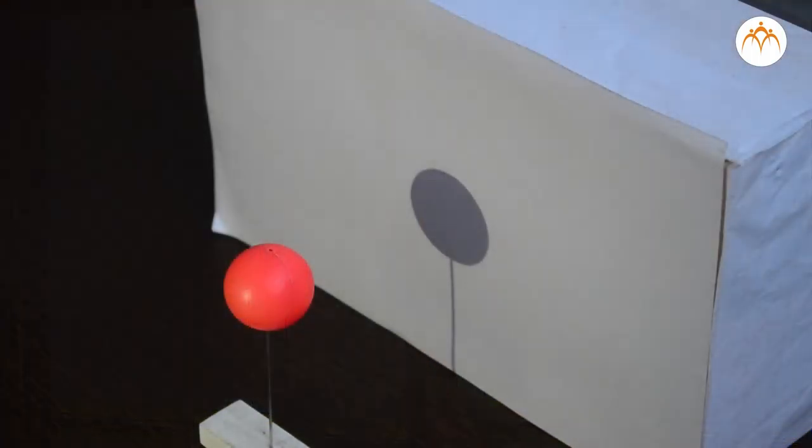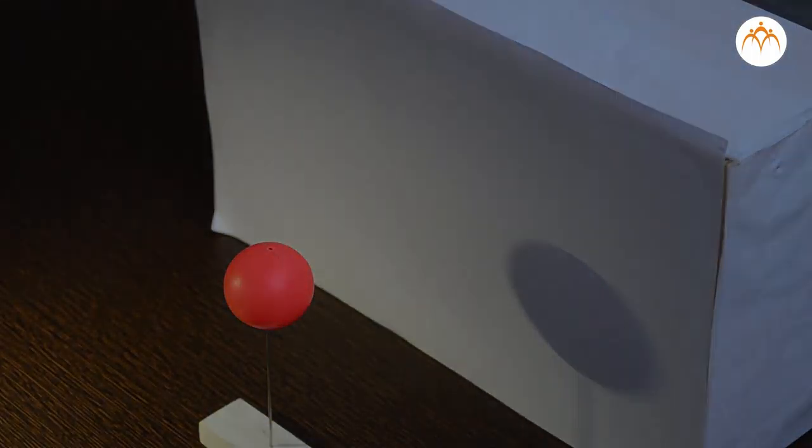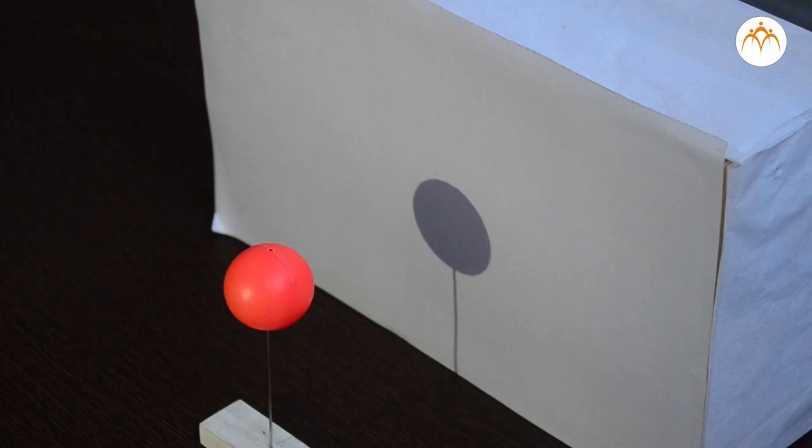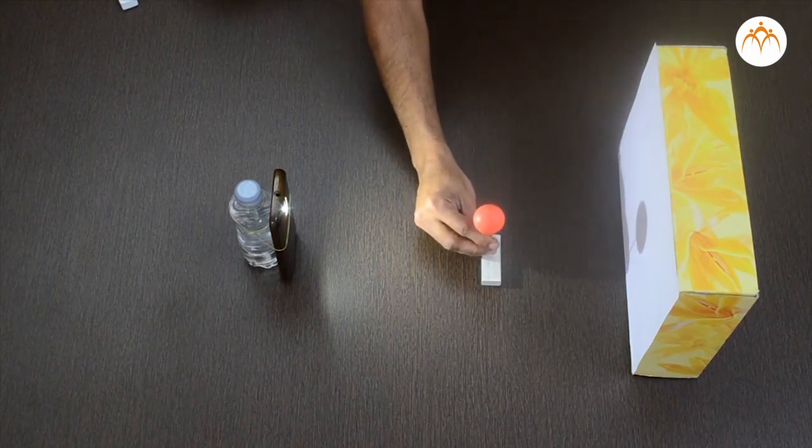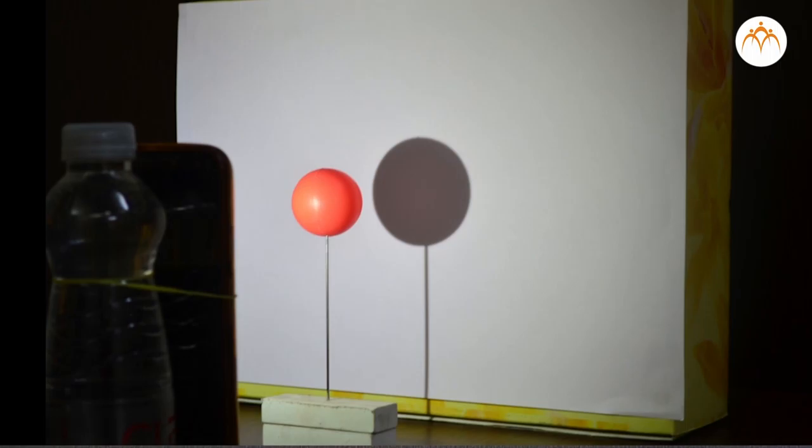The closer the object to the light source, the larger the shadow. Closer the object to the screen, the sharper it is. It is not necessary that the shape of the shadows will be identical to the shape of the object.